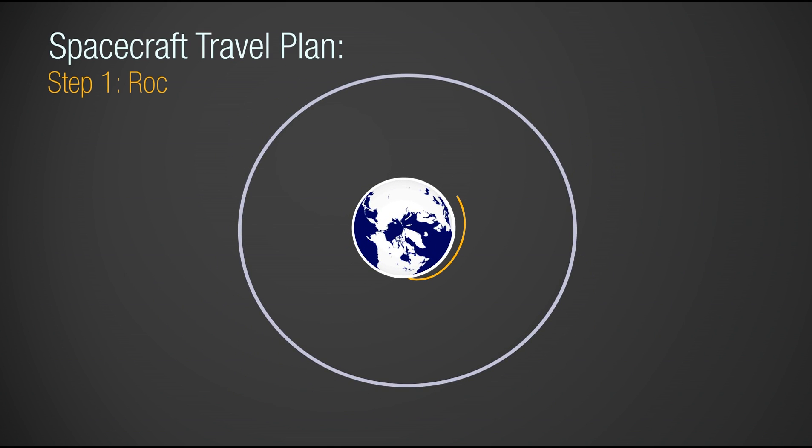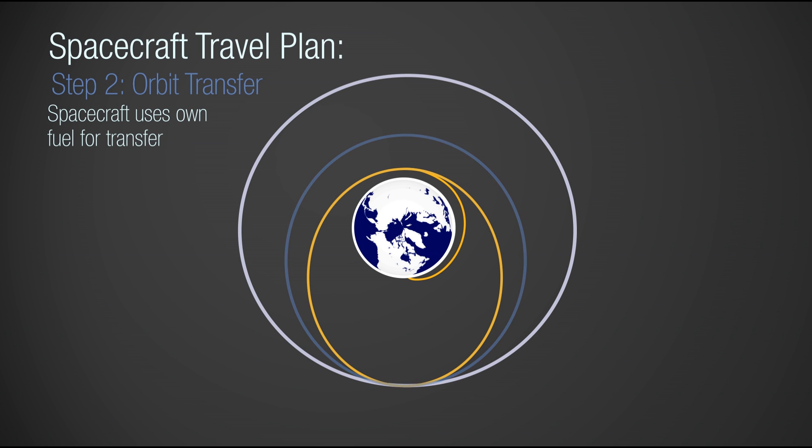First, the rocket will launch your spacecraft towards Geo, where it will get dropped off. Then, your spacecraft will have to drive itself to its final orbit location. I'll get my trajectory people on it. You don't have people, Rich.